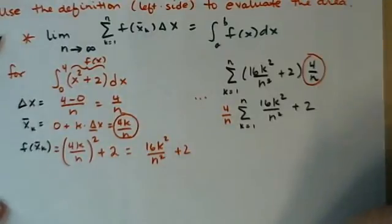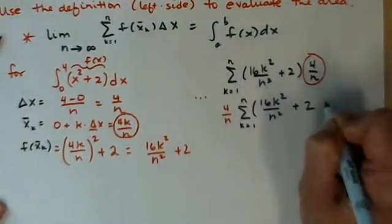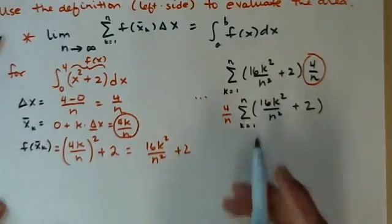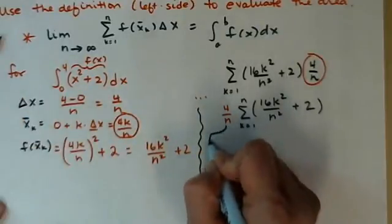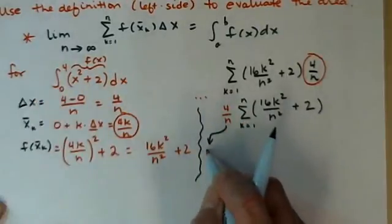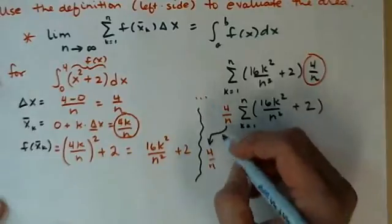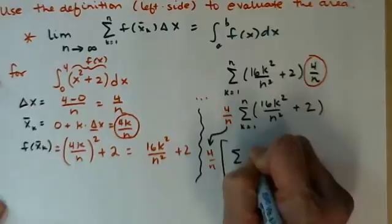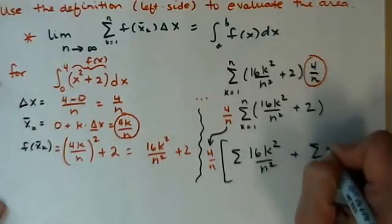I'm going to break it up again. So now I have the sum of a sum and our sum properties, our summation properties, says that I can split that up into 2. So break this apart, make sure we're not going to get confused, my 4 over n, still tagging along. Remember, it's going to distribute, so if I drop some parentheses, you guys catch me later.